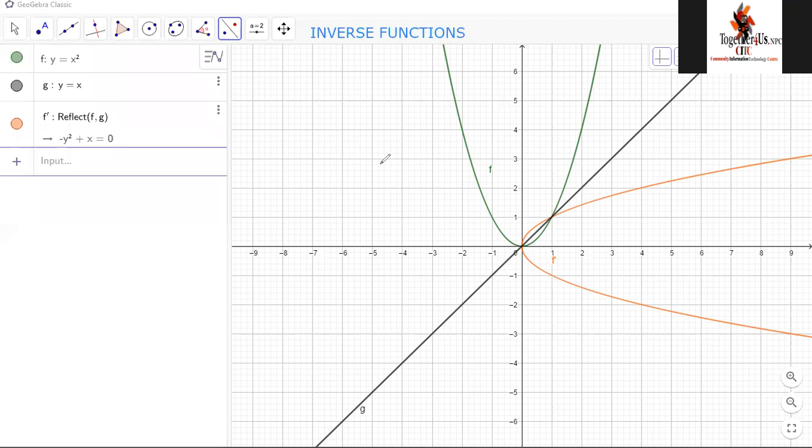So to start with, let us see what happens. I've got GeoGebra here has the equations. I put up this equation, but after reflecting, it has put up this equation. What is happening in this equation? It says minus y squared plus x equals zero. That means basically y squared is equal to x.